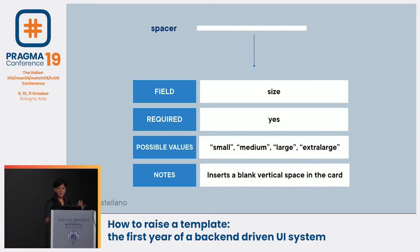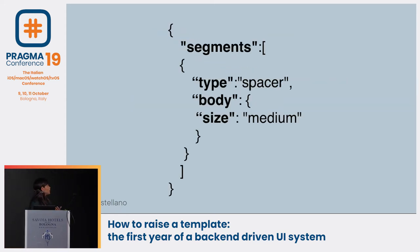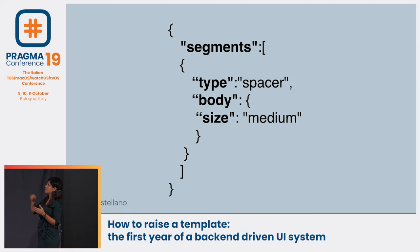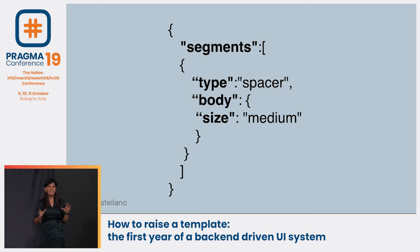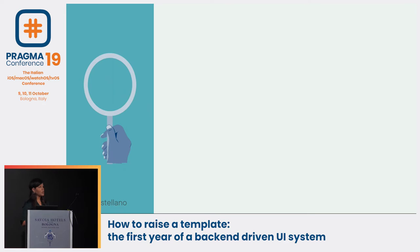Once the language was defined, our back-end developers transformed it into JSON. The JSON response we get has a 'segments' array, where each element has a type — in this case 'spacer' — and a body with the size set to 'medium'. With that defined, the next step was to implement this on the mobile clients.